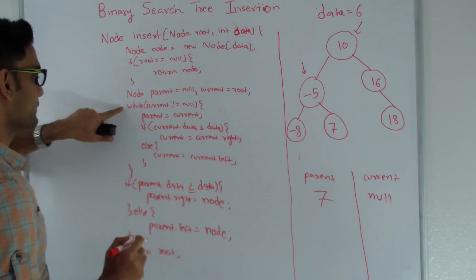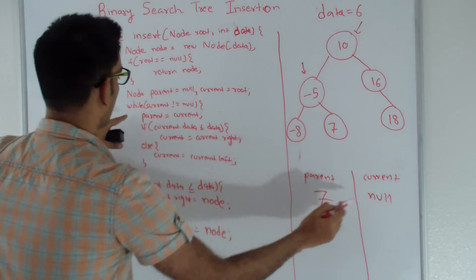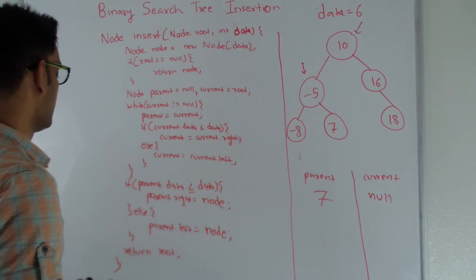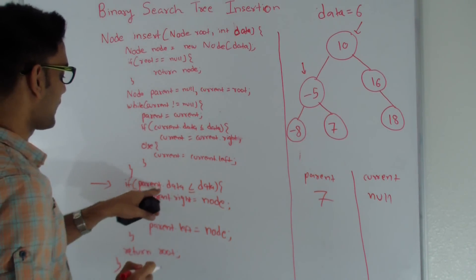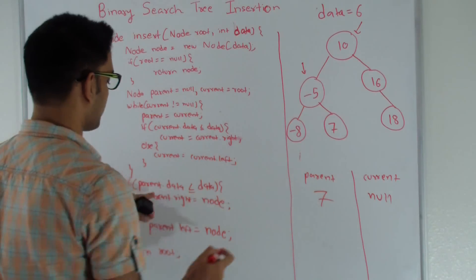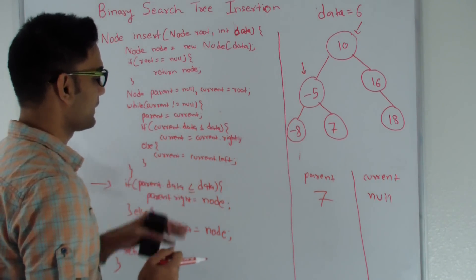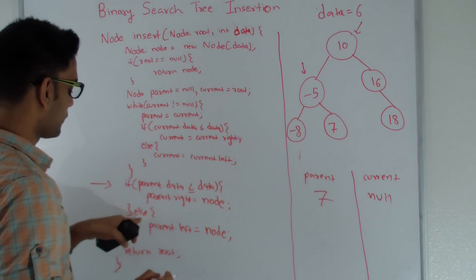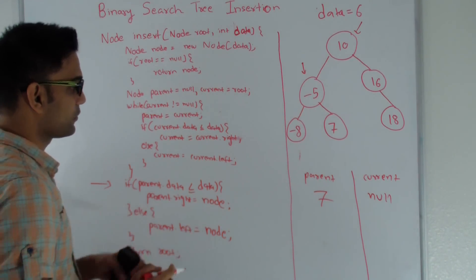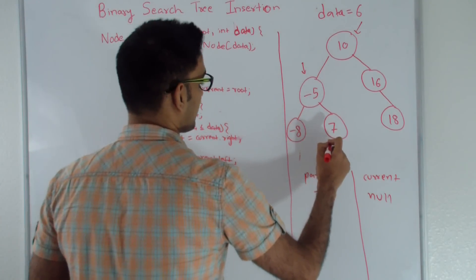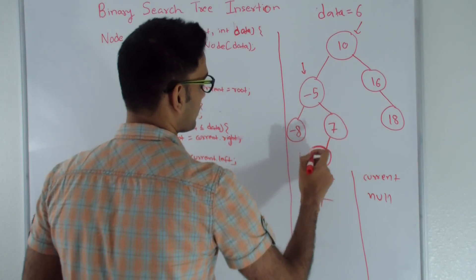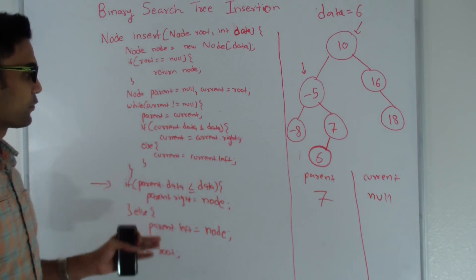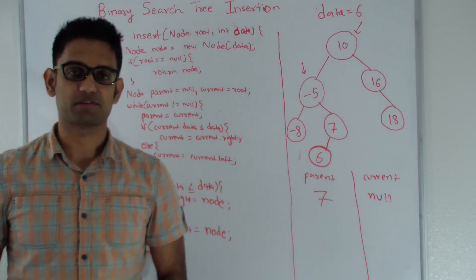We go back to the top of the while loop. Current is now null so the loop breaks. We check if parent data (7) is less than or equal to data (6) — 7 is not less than or equal to 6, so we go into the else condition and set parent dot left equal to node. So 7's left child becomes 6. This is how the code works and how 6 is inserted into the binary search tree.